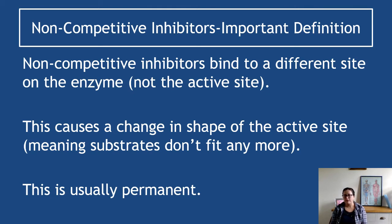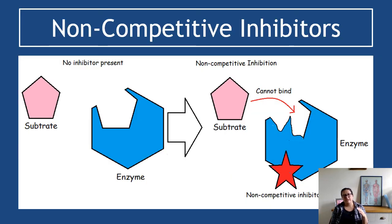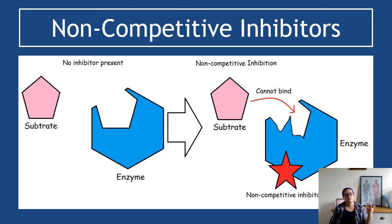Non-competitive inhibitors, sometimes known as allosteric inhibitors, bind to a different site on the enzyme — not the active site. This causes a change in the shape of the active site, meaning substrates no longer fit. It is usually permanent, though sometimes temporary. In the diagram, the non-competitive inhibitor binds somewhere else on the enzyme, the active site completely changes shape, the substrate can't bind, and therefore enzyme activity decreases.